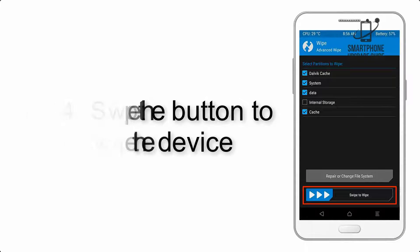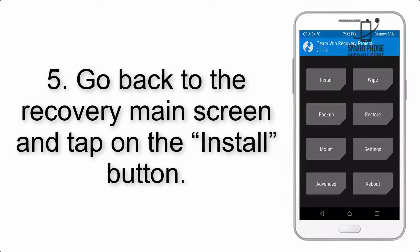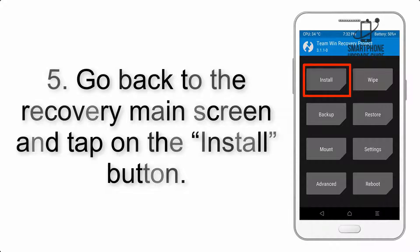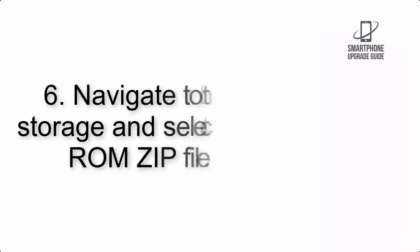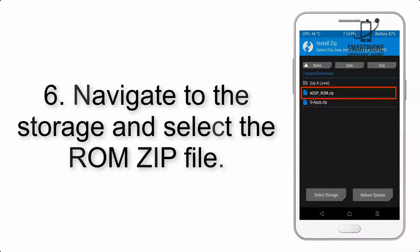Step 5: Go back to the recovery main screen and tap on the Install button. Step 6: Navigate to the storage and select the ROM zip file.